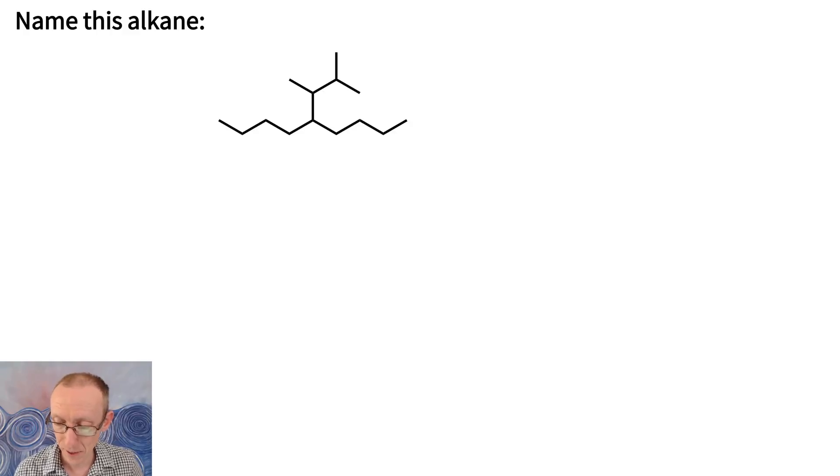So the first step in naming this compound is going to be the same as with all of our naming alkanes examples. We look for the parent chain first. So that's numbered from one end of our simplest possibility, which is down here.